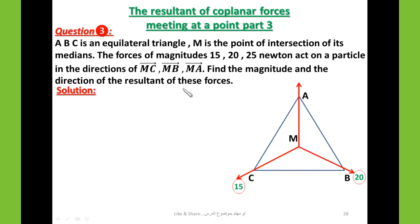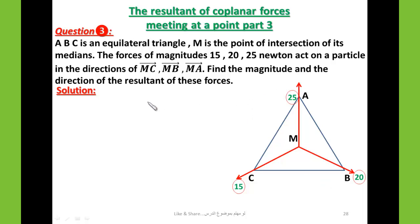So we have three forces: 15 newtons in direction MC, 20 newtons in direction MB, and 25 newtons in direction MA. Find the magnitude and the direction of the resultant of these three forces.